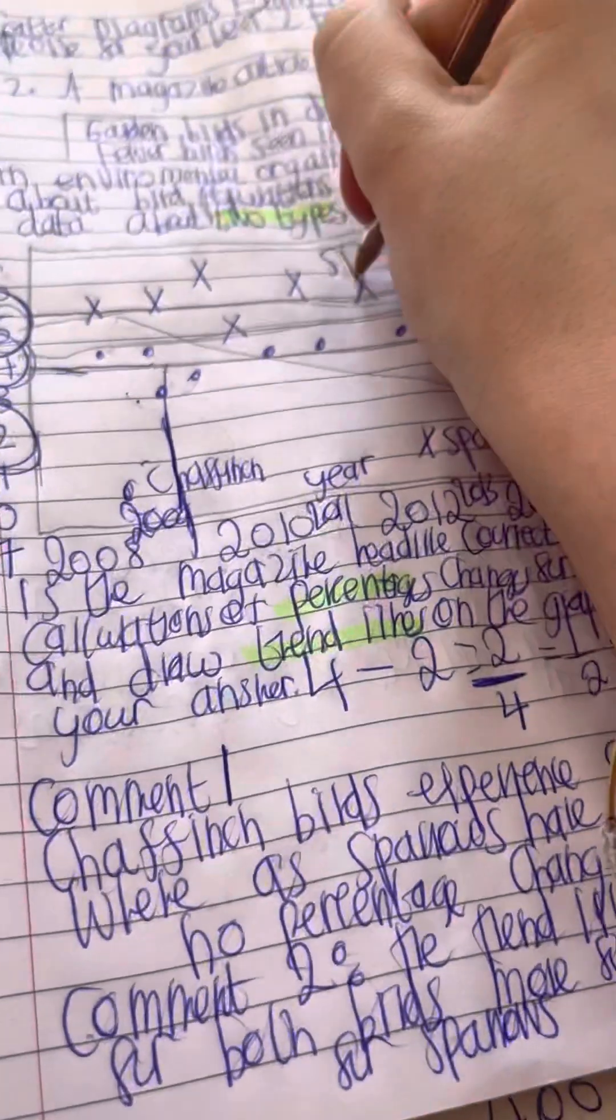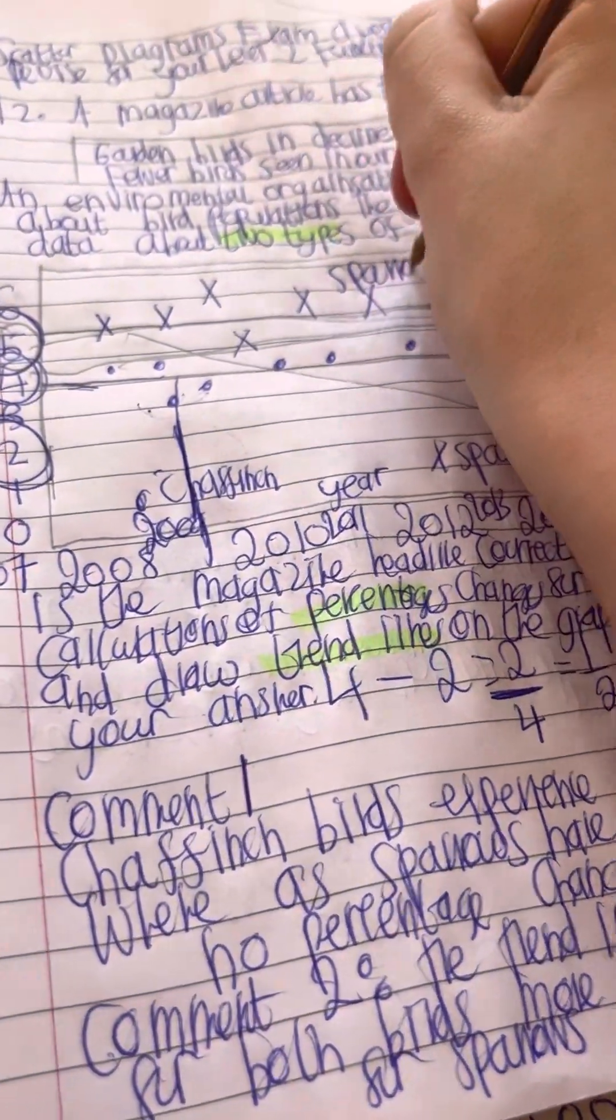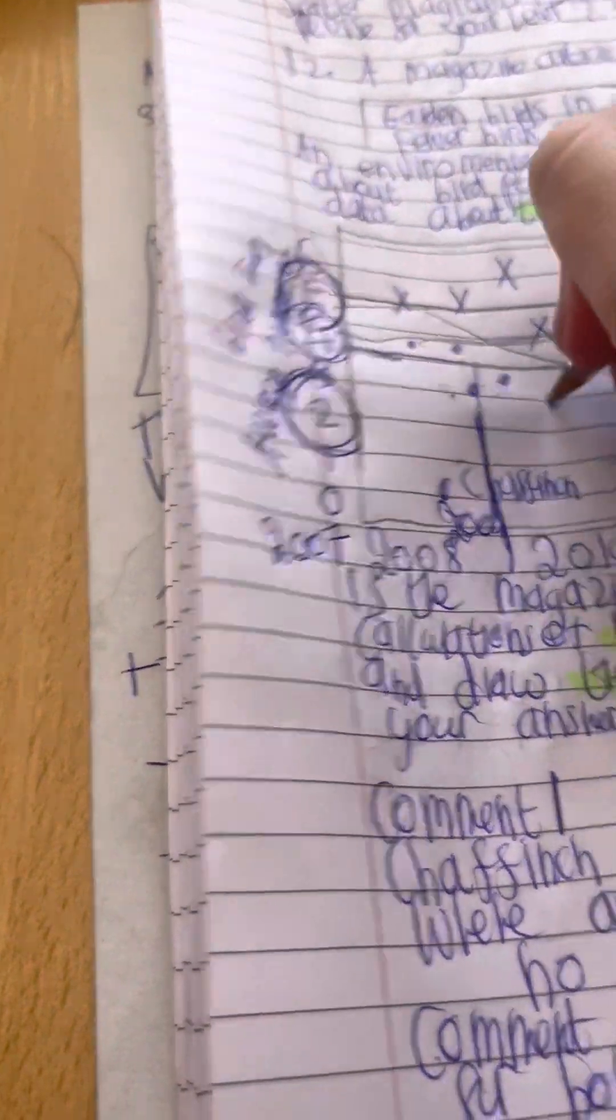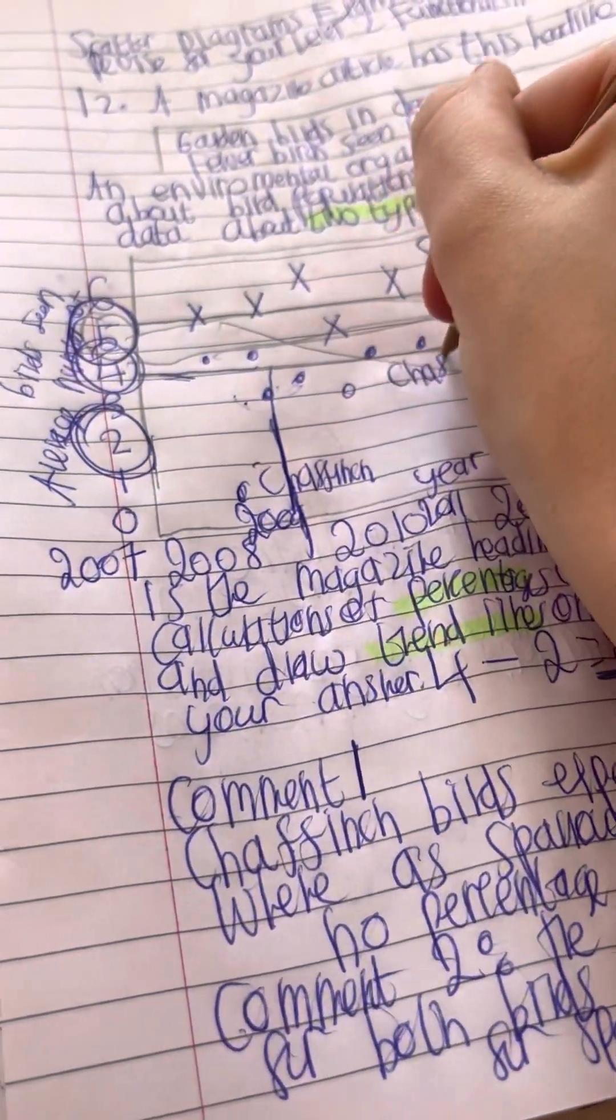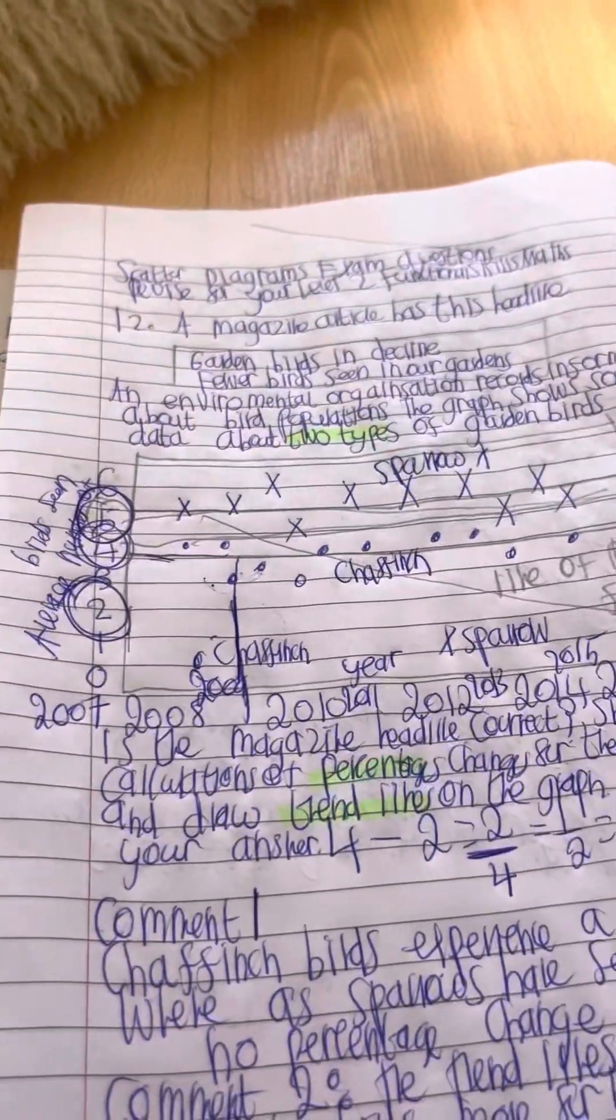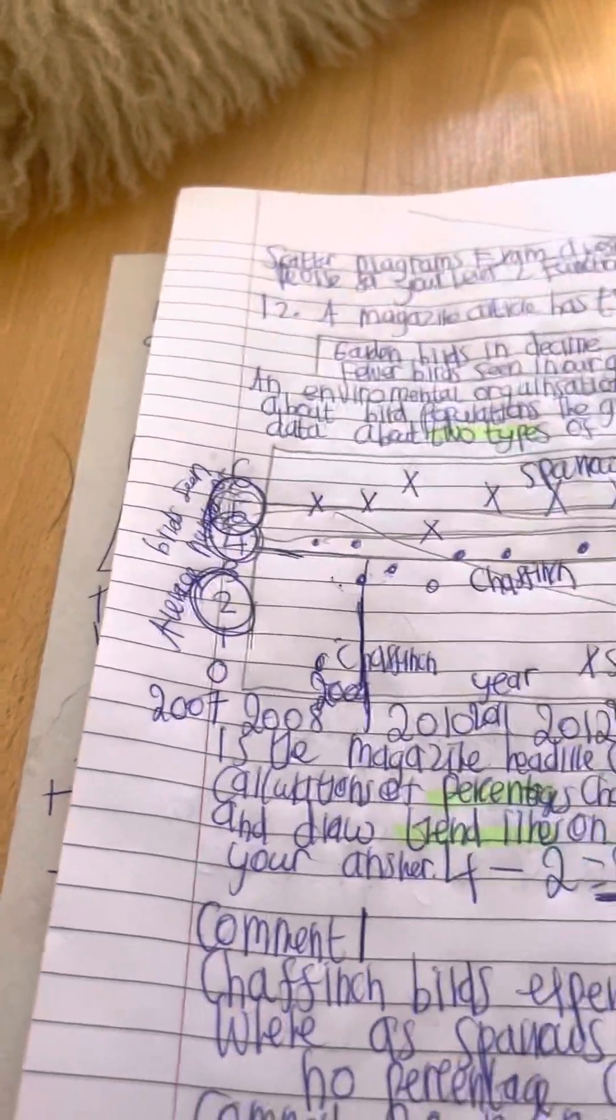And remember as well, before I end this video, you've got to make sure that right here the x's are the sparrows. I'm writing before I end, so sparrows are the x's because it tells you on the scatter diagram. And the chaffinches are the little dots here. Chaffinch are the little dots here. And it's telling you what type of bird is being used. That's the question.